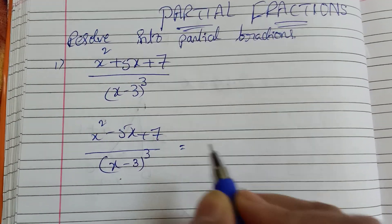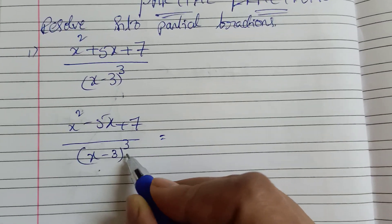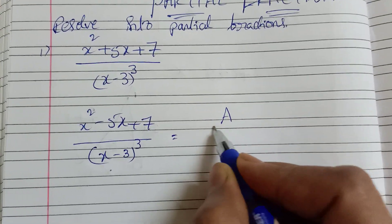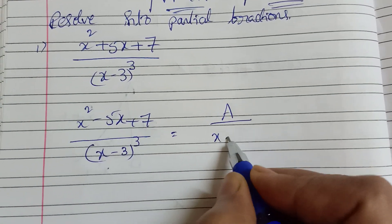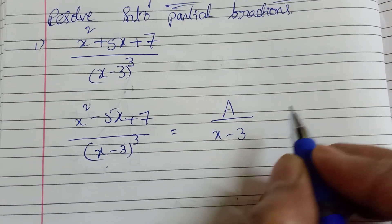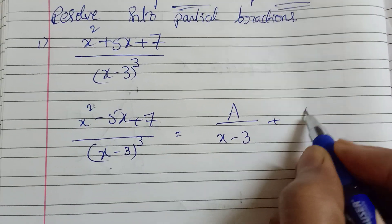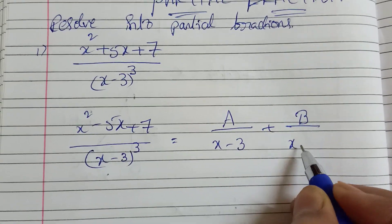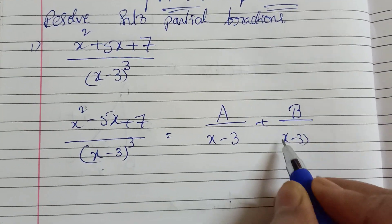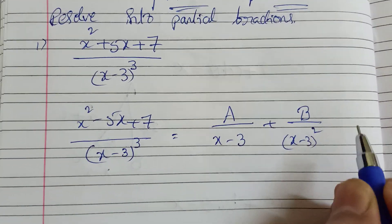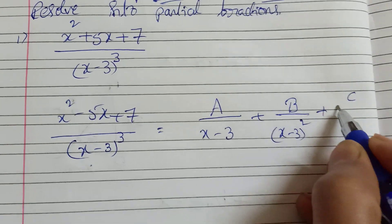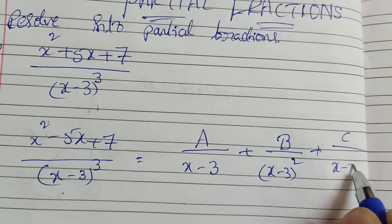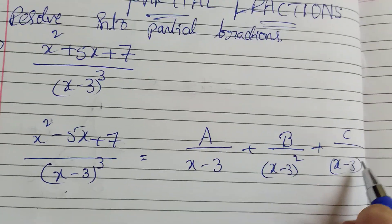Let's start. We write: A by (x minus 3), plus B by (x minus 3) whole square, plus C by (x minus 3) whole cube.